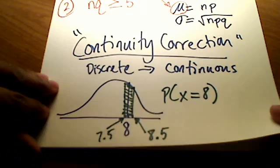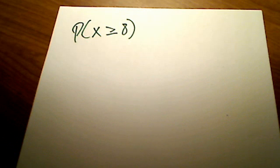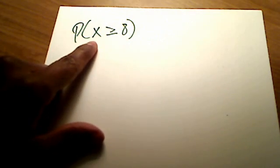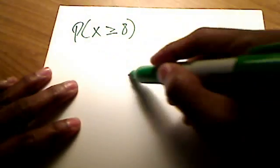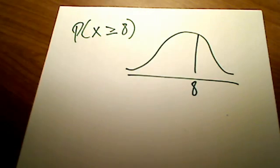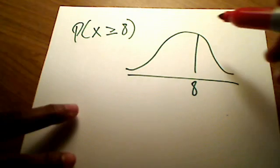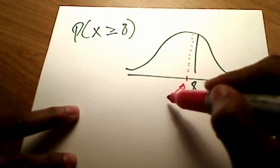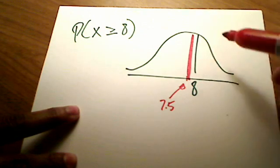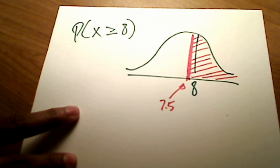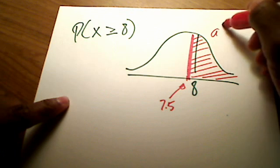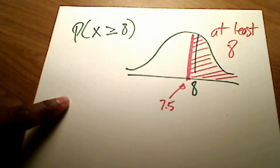How does continuity correction work for something like x is greater than or equal to 8 — at least 8, where we include 8? If 8 is sitting right there and I'm shading to the right to include 8, I need to go just to the left of 8, which is 7.5. And I'm going to shade everything greater than that, because that is a greater-than-or-equal-to symbol. That's what at least 8 looks like as far as continuity correction is concerned.